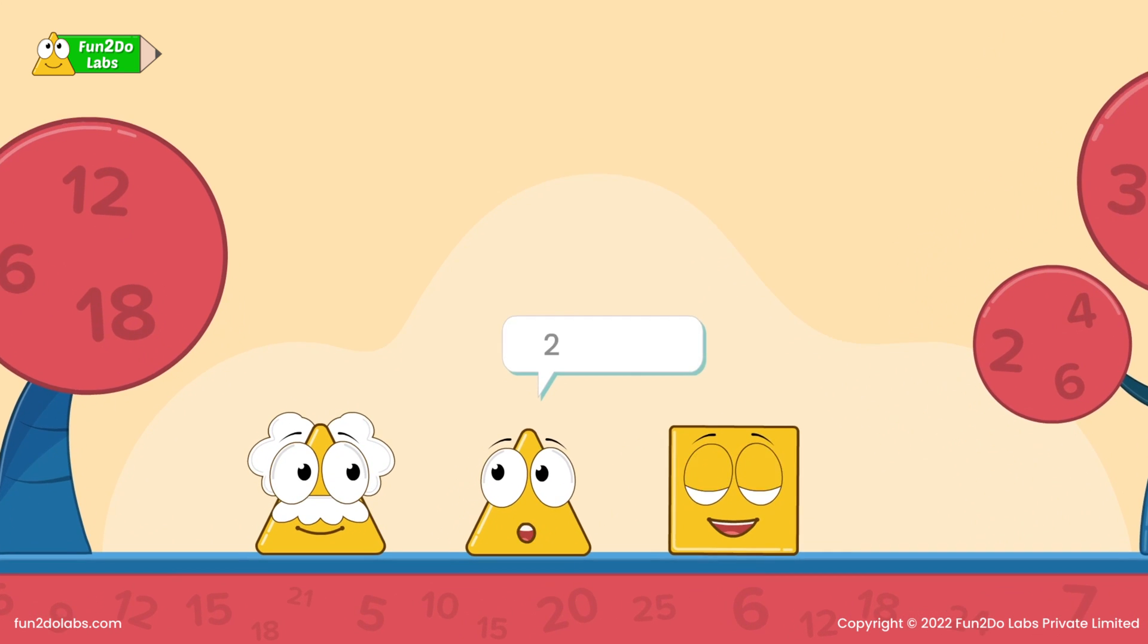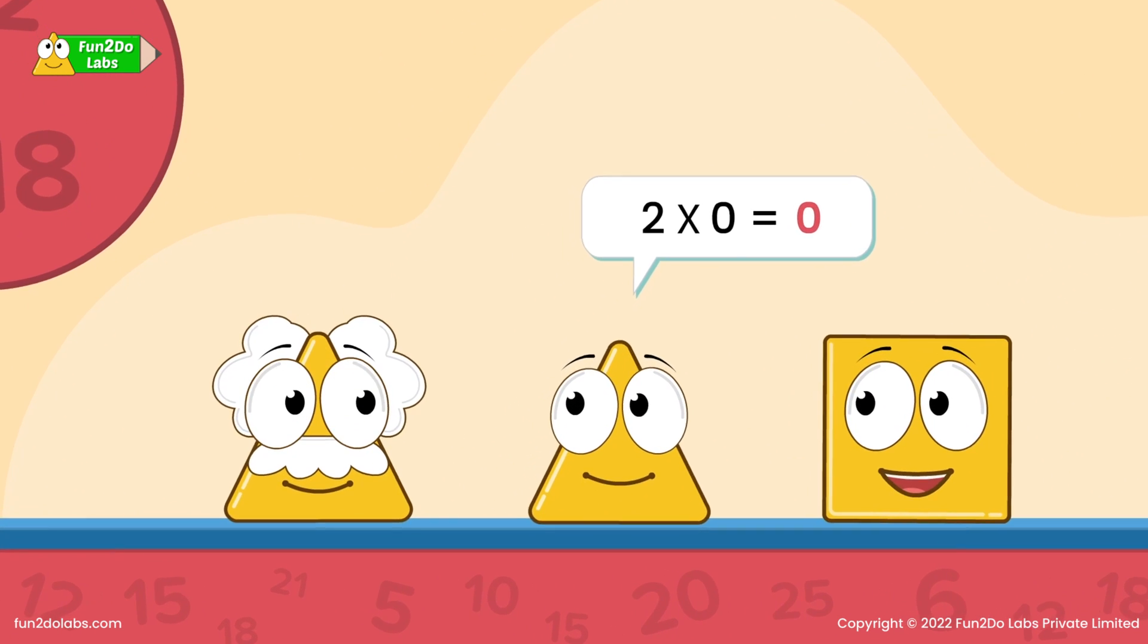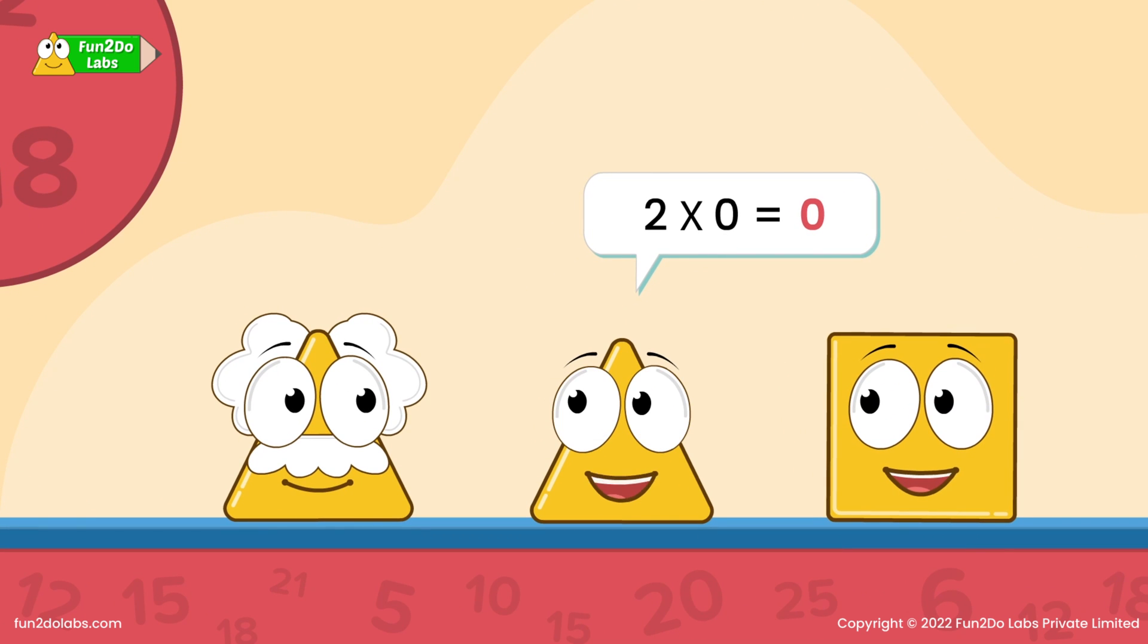Oh, when I multiply a number by 0, the result is 0. So, 0 also can be a multiple of a number. Right? Correct. Good observation dear.